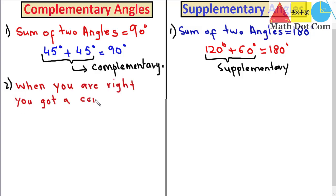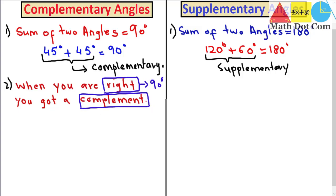This sentence will help you memorize which pair of angles is complementary and which is supplementary. From this sentence, 'right' refers to 90 degrees — like a right angle. So when you get a compliment, it means in complementary angles the two angles sum up to 90 degrees, which is equal to a right angle.